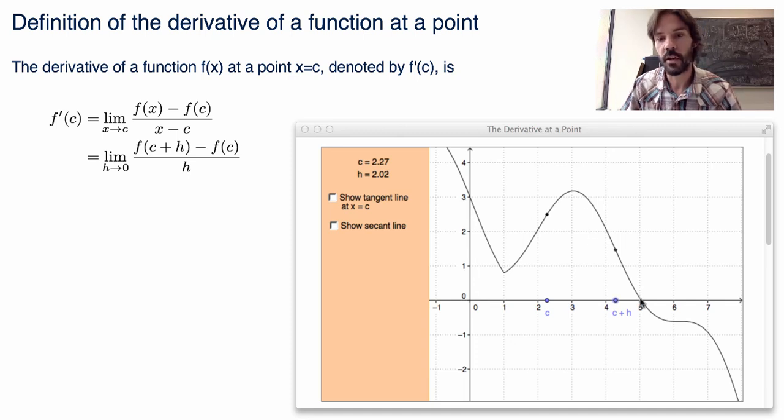So I have some function here, and I take two points—I'm gonna call the first point c and the second point c plus h. The derivative as we defined it was basically the difference in the y-coordinates over the difference in the x-coordinates, and then we took the limit where we send this point very close to this point, so we had an object defined only at this point.